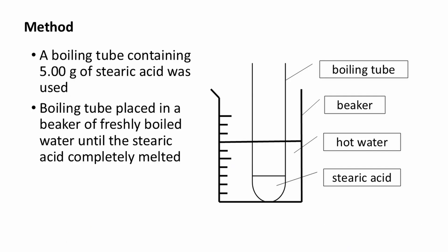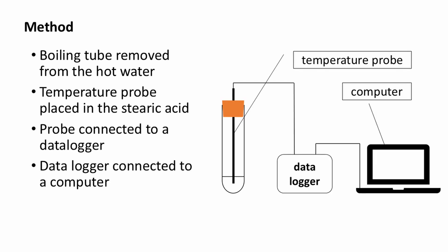This is the method that we used. A boiling tube containing about 5 grams of stearic acid was used. The boiling tube was placed in a beaker of freshly boiled water until the stearic acid completely melted. Next, the boiling tube was removed from the hot water. A temperature probe was inserted into the stearic acid. The probe was connected to a data logger and the data logger was connected to a computer.